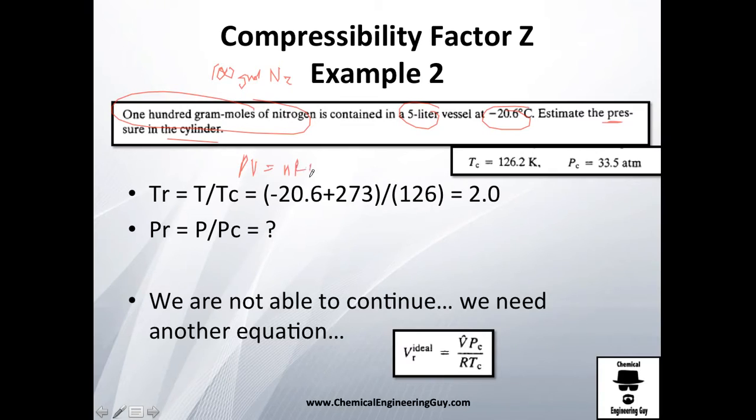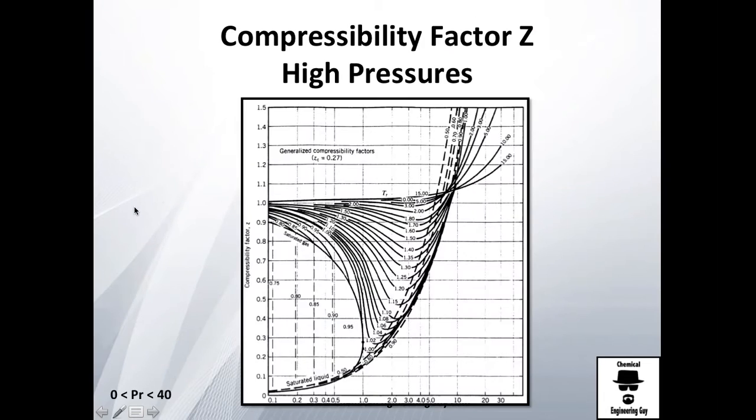You may use PV equals NRT or whatever you want, but we're going to use the compressibility factor. First thing first, we're going to need the critical temperature and the critical pressure of that value because we need the reduced temperature and the reduced pressure.